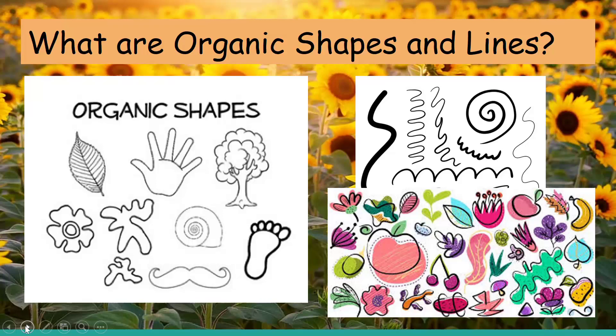Organic shapes are shapes that are created by nature. A lot of times things that you see outside like leaves and flowers, seashells, or a tree are organic shapes.